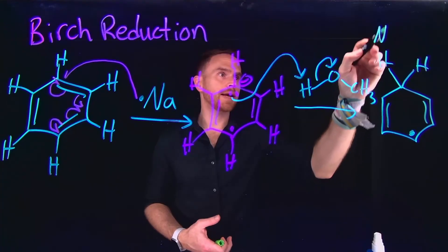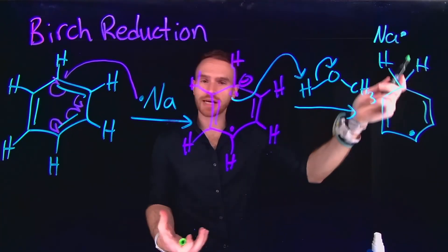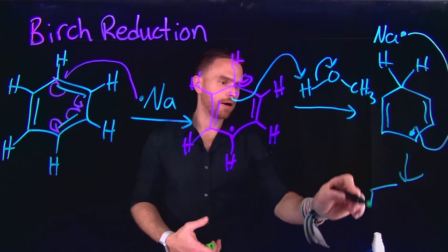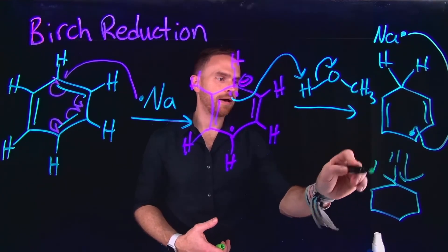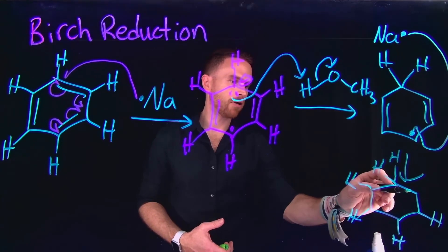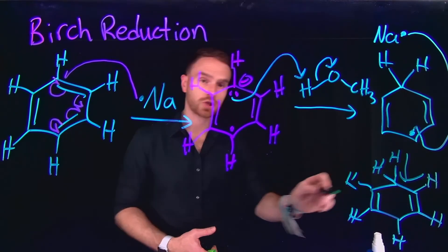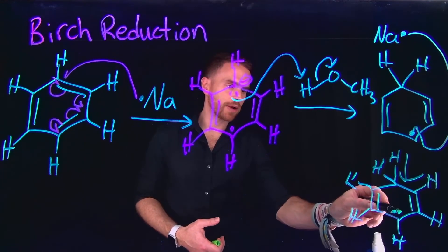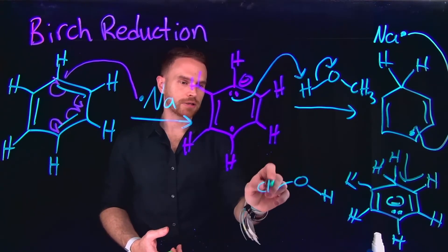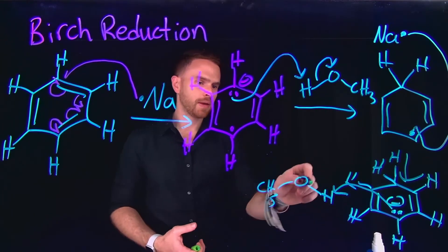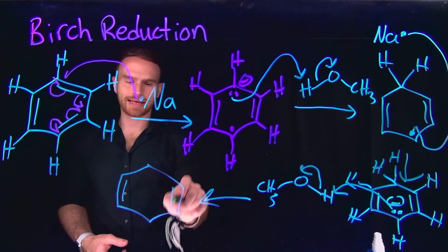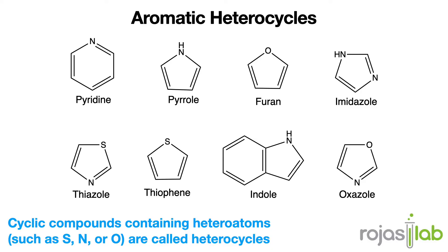Therefore, if we had another sodium metal present, which can again donate that single valence electron, this could generate another carbanion at the bottom position. So now we have placed two hydrogen atoms at the top, we still have a single hydrogen atom at all of the other positions, and we still have those two double bonds. Now that we have generated this second carbanion, remember we still have plenty of methanol in our reaction, which can again be deprotonated in order to form a reduced cyclohexadiene compound.